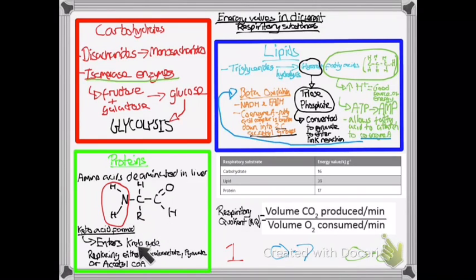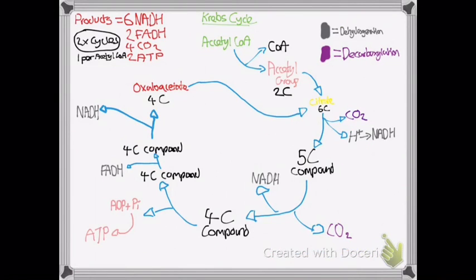The keto acid can replace either oxaloacetate or pyruvate or acetyl-CoA within the Krebs cycle. If we just look back at the Krebs cycle, we've got a keto acid can enter at this point here instead of acetyl-CoA. It can enter just before where it's not shown in the diagram as pyruvate, but that will be involved in the link reaction as well. There is also some keto acids that enter at this point as another 5C compound.